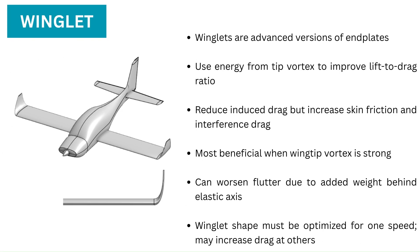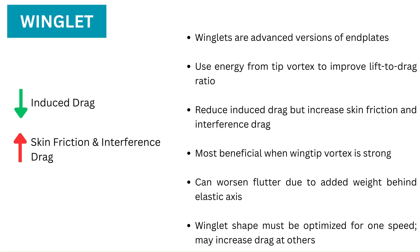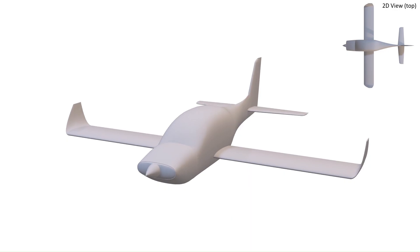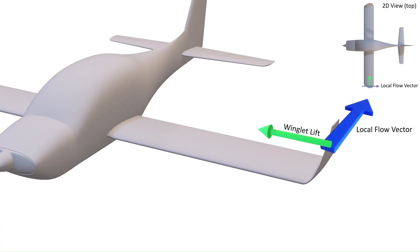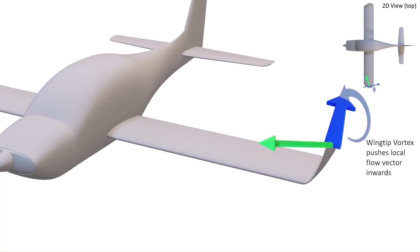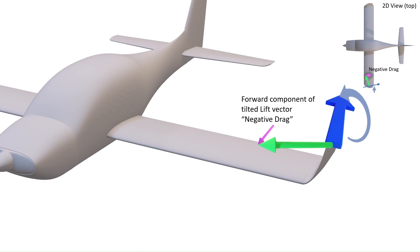Winglet: from a certain point of view, the winglet is an advanced version of the endplate. The winglet was invented by NASA genius Richard Whitcomb. It gets an additional drag reduction by using the energy available in the tip vortex and can increase the lift-to-drag ratio by up to 20%. A winglet reduces induced drag but increases skin friction and interference drag. They are aerodynamically viable only when the reduction in lift-induced drag is larger than the increase in skin friction and interference drag. A winglet is a nearly vertical surface that acts as a little wing and generates a lift force pointing inwards. The rotating vortex near the wingtip causes the local flow striking the winglet to be angled inwards, so the winglet's lifting force — perpendicular to the local flow direction — gets a noticeable forward component. This forward lift component acts as a negative drag, reducing the total wing drag.